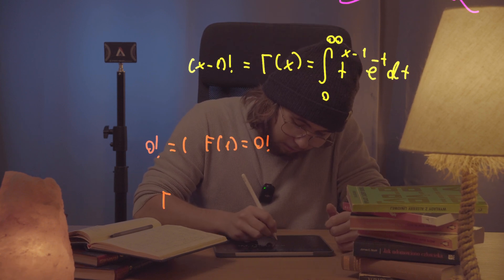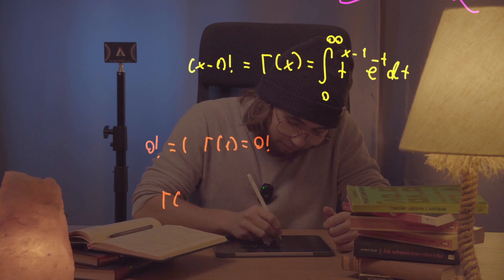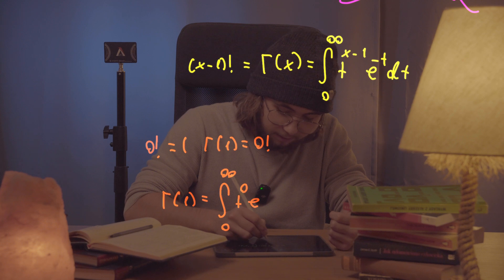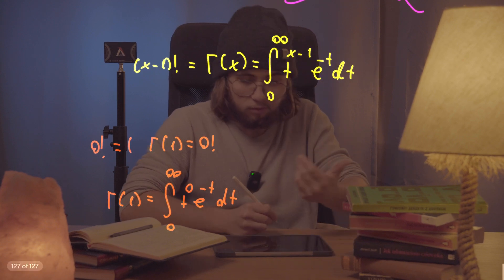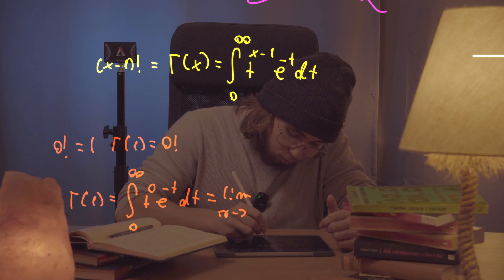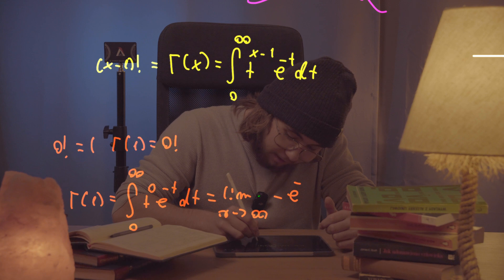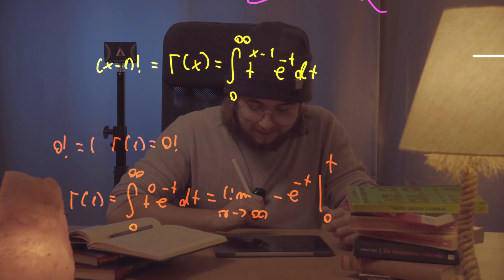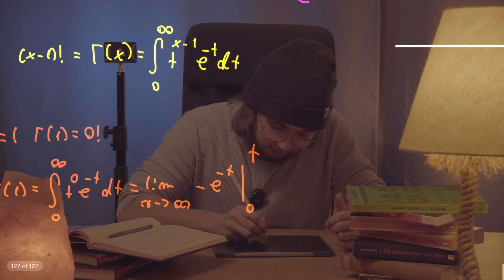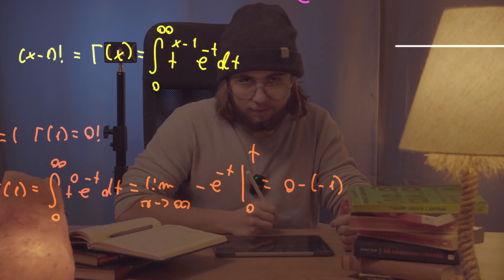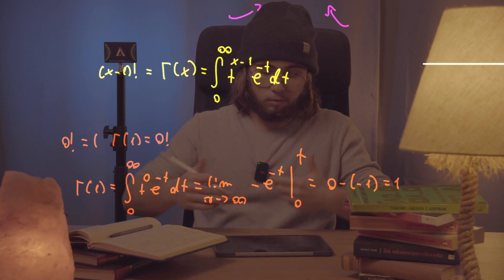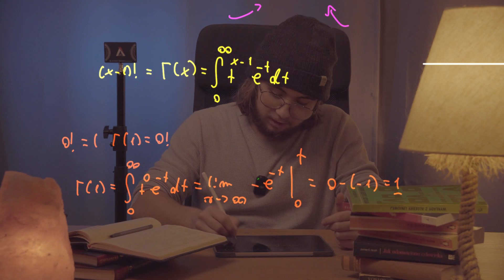Gamma of 1 will be equal to the integral from 0 to infinity of t to the power of 1 minus 1, which is just t to the 0, times e to the negative t power. This is just the integral from 0 to infinity of e to the power of negative t, which is the limit as r approaches infinity of negative e to the power of negative t. That gives us 0 minus negative 1, which equals 1. So gamma of 1, which is supposed to be 0 factorial, is actually equal to 1.